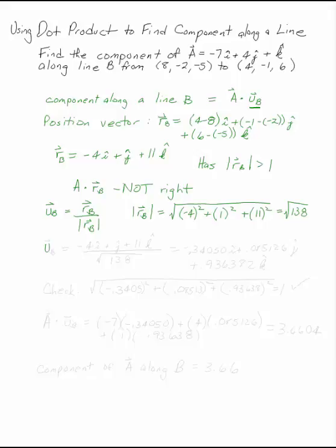So the unit vector is -4i + j + 11k divided by the square root of 138.